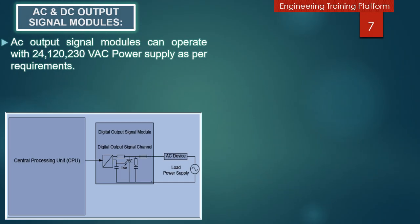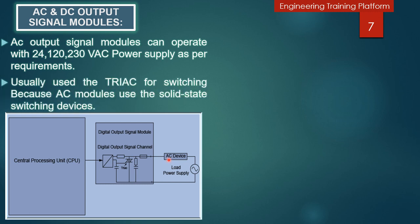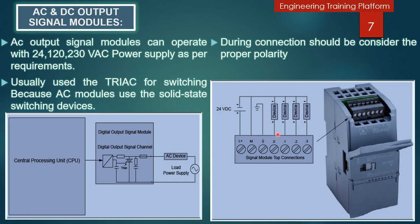The AC output signal modules typically operate with a load power supply of 24 volt, 120 to 230 volt AC, or may be capable of operating with either source. These modules use solid-state switching devices — usually a triac — to control each output. This type of output works reliably for many AC output devices; however, triacs allow a small leakage current to flow when the output is off, which is not suitable for some AC devices. You can also see in the picture eight output signal modules — four on top and four on the bottom — shown with source-type connections.